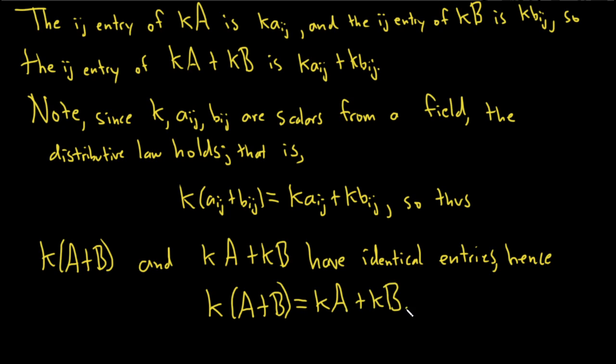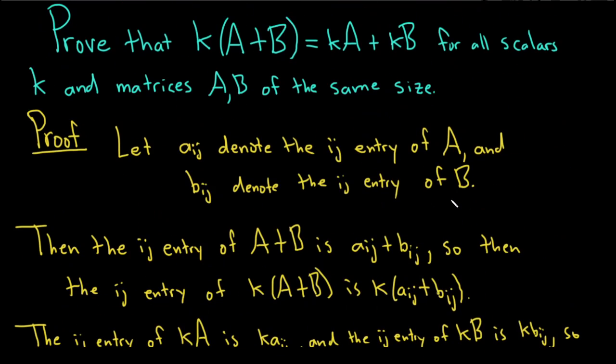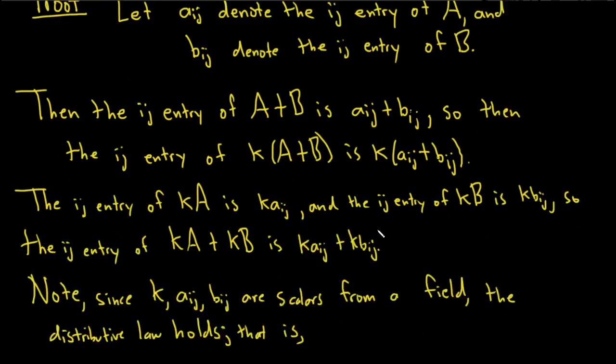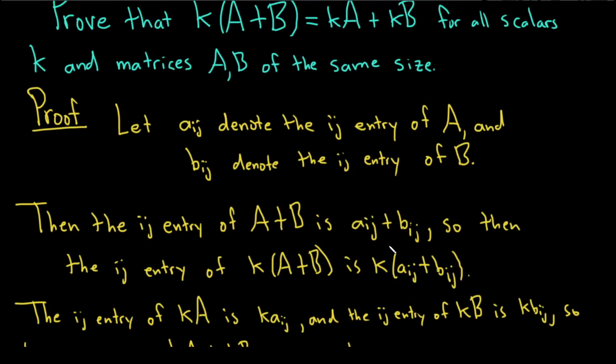So quite verbose and a lot of writing, but I just wanted to go through all of the details. This is a very fundamental proof regarding the distributive property. So a scalar will distribute across addition for matrices. Hopefully this video has been helpful to someone out there. Good luck.